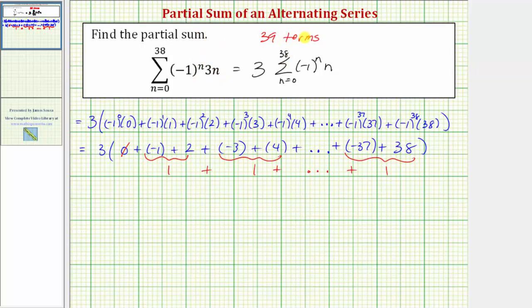Well we knew we had 39 terms, but this first term is zero, which means we have 38 non-zero terms. So if we pair 38 terms, we'd have 19 pairs, because 38 divided by two equals 19.